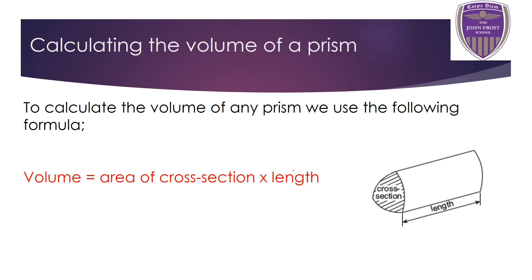To calculate the volume of any prism, we use this formula: find the area of the cross section — that's the part shaded in yellow — and multiply it by the length of the shape. This formula is given on the front page of the exam paper.